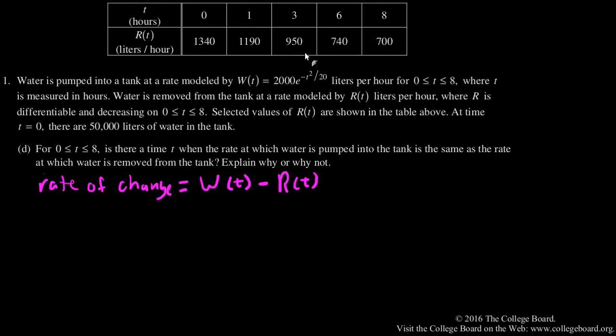We know that this here will be continuous and differentiable everywhere, which is nice and useful. We also are told that it's modeled by r of t where r is differentiable. Differentiable means continuous.